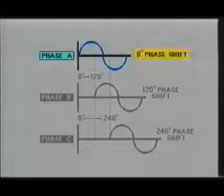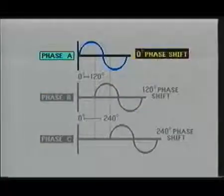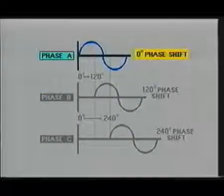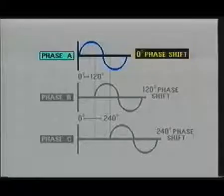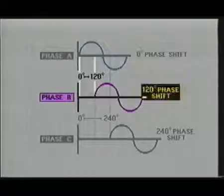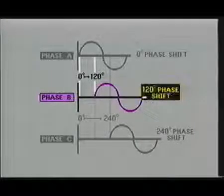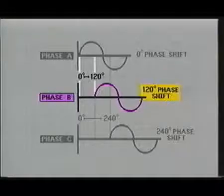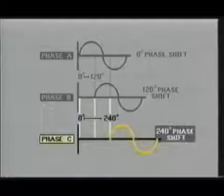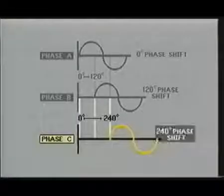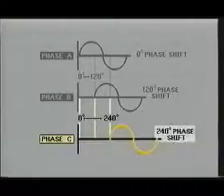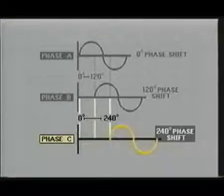Notice that phase A starts at the zero degree point and completes its cycle at 360 degrees. Now notice that phase B starts 120 degrees from the phase A sine wave and completes its cycle at 480 degrees. Phase C, on the other hand, starts 240 degrees from phase A and completes its cycle 600 degrees from the start of phase A.